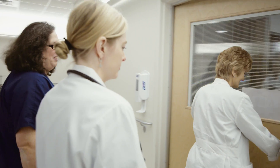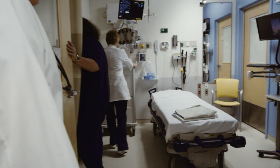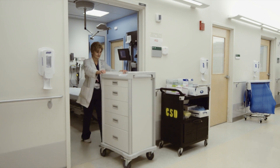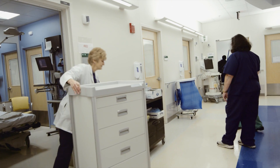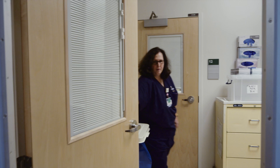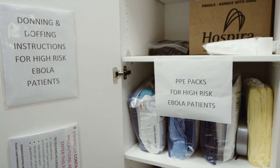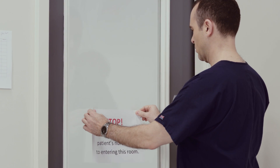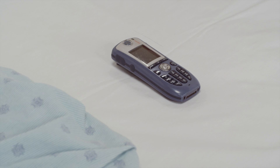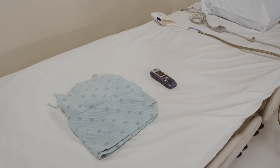Once notification is received that a patient under investigation for Ebola is identified, ensure the designated isolation room is prepared. If available, you may decide to put the patient in an isolation room with negative pressure in anticipation of needing to perform any aerosol-generating procedures. All unnecessary medical equipment should be removed from the room prior to the patient arriving. There should be separate areas adjacent to the isolation room to be used for donning and doffing PPE. Ensure all appropriate PPE is available and staff have been trained to properly don and doff PPE. Post a Do Not Enter room sign on the door and a sign-in log on the door to document who enters the room.